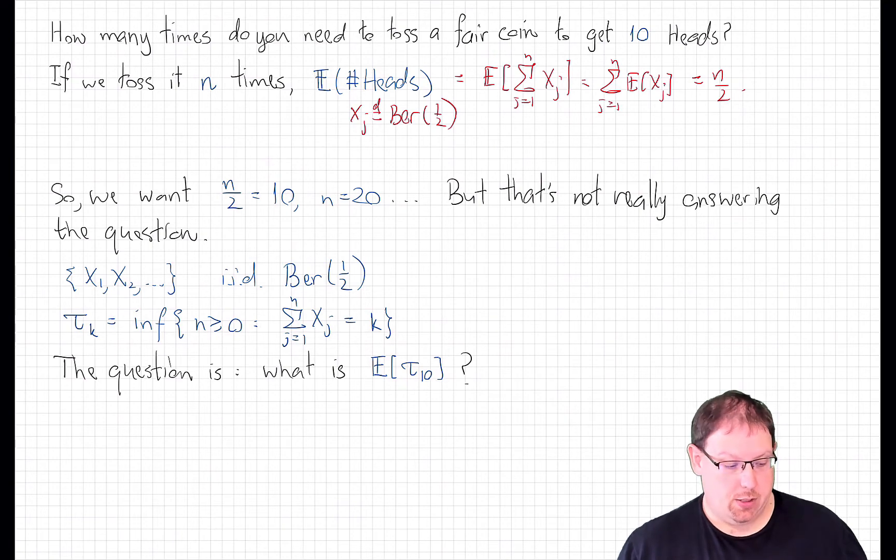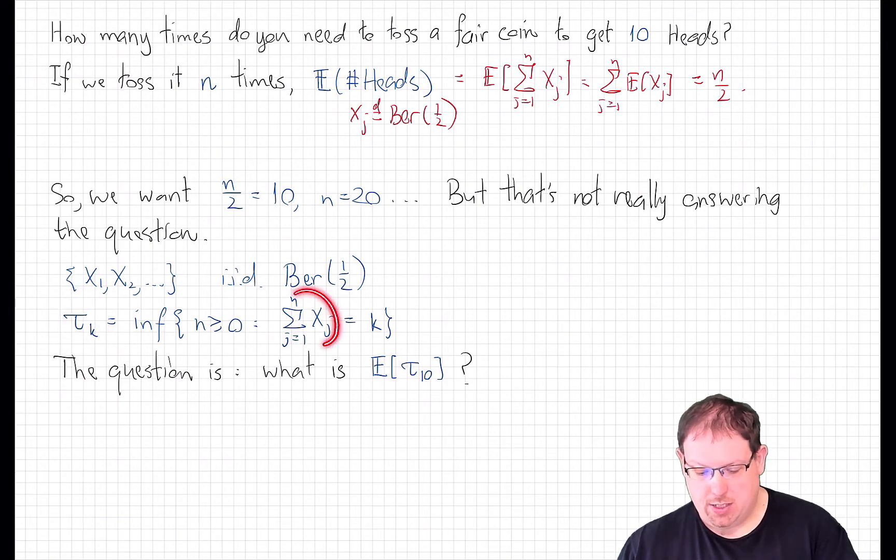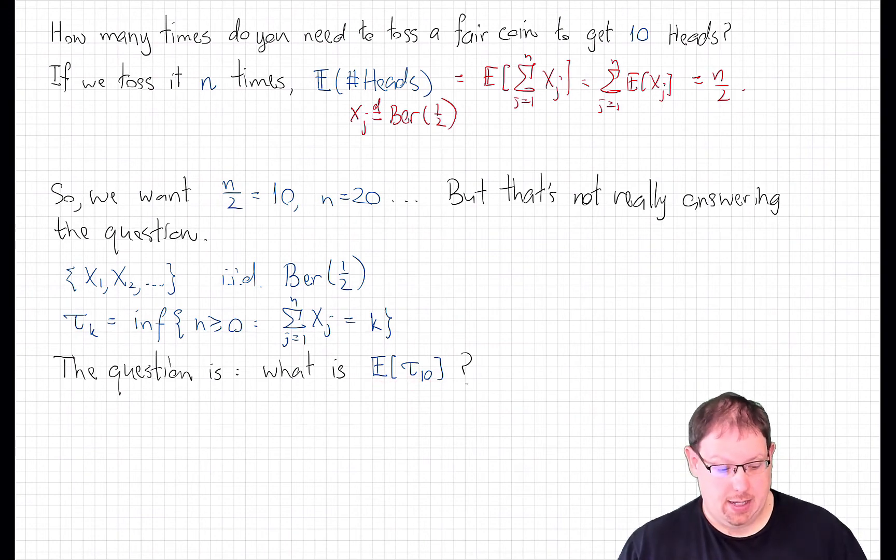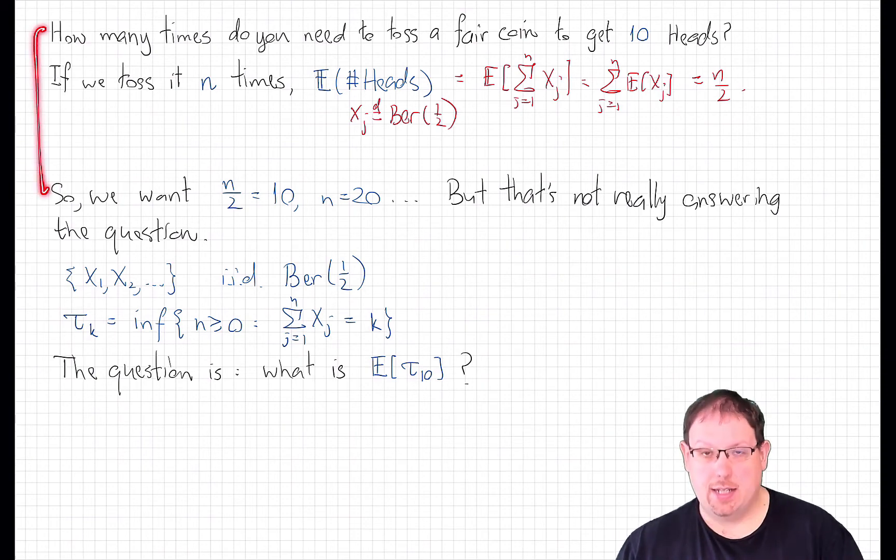Here's what we actually have. We have a sequence of iid Bernoulli one-half random variables. And what we're asking about is the expected value of a certain random time. If we let tau k be the first time at which the sum equals k, we want to know the expected value of tau 10. That's the question. That is not what this answers, where n was a fixed deterministic time.